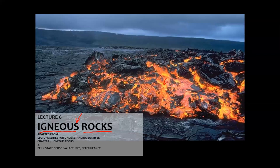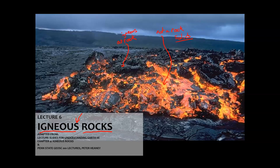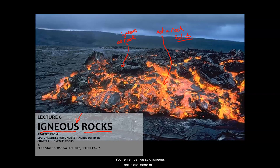This stuff in here is probably not a rock yet. Why is that? You should be able to tell me based on what a rock is — it's got to be solid, right? So that liquid is still not quite crystallized into mineral grains. But this stuff on the surface here is probably a rock now. And since it's forming from a melt, it is an igneous rock. Based on its color, you can probably guess something about what it's made of. Remember we said igneous rocks are made of silicate minerals. And what color is this? It's dark — you remember that's mafic.